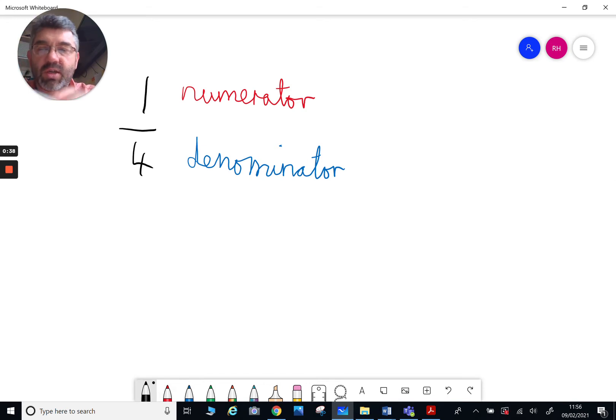If we take two fractions where the denominator is the same, adding them is quite easy. So for instance, if you take two quarters and one quarter, what we do not do is add the denominator. We keep the four the same. That doesn't change. All we are interested in is adding the two and the one to make three. So two quarters and one quarter make three quarters.